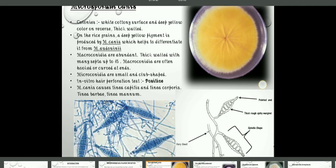The next species is Microsporum audouinii. The colonies are dense fur-like mats with radiating edges, grayish-white to salmon-pink colored. Pectinate hyphae are present with rare macro- and microconidia. It is anthropophilic, which means it infects humans. Hair and skin infected with M. audouinii give fluorescence under Wood's UV light. Wood's UV illuminator is the diagnostic device. The in vitro hair perforation test is negative. It causes tinea capitis and tinea corporis.